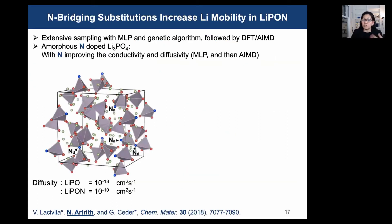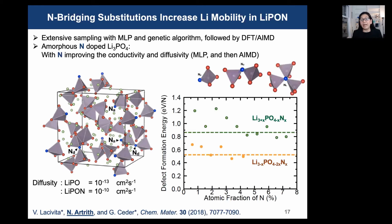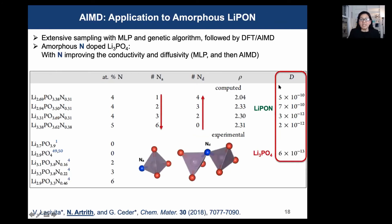Amorphous phases are also challenging for DFT since extensive sampling and large structural models are needed. Together with Dr. Lassivita, we used a combination of machine learning potentials with genetic algorithm sampling to explore structures of amorphous LiPON solid electrolytes with very different nitrogen contents and compositions. After this structure search, we then used important structures to run long episodic MD simulations to predict lithium diffusivities. Our simulations show that nitrogen bridges in different motifs are good for lithium transport. Lithium diffusivity is generally higher in LiPON than in Li3PO4, and diffusivity increases with the concentration of bridging nitrogen atoms.